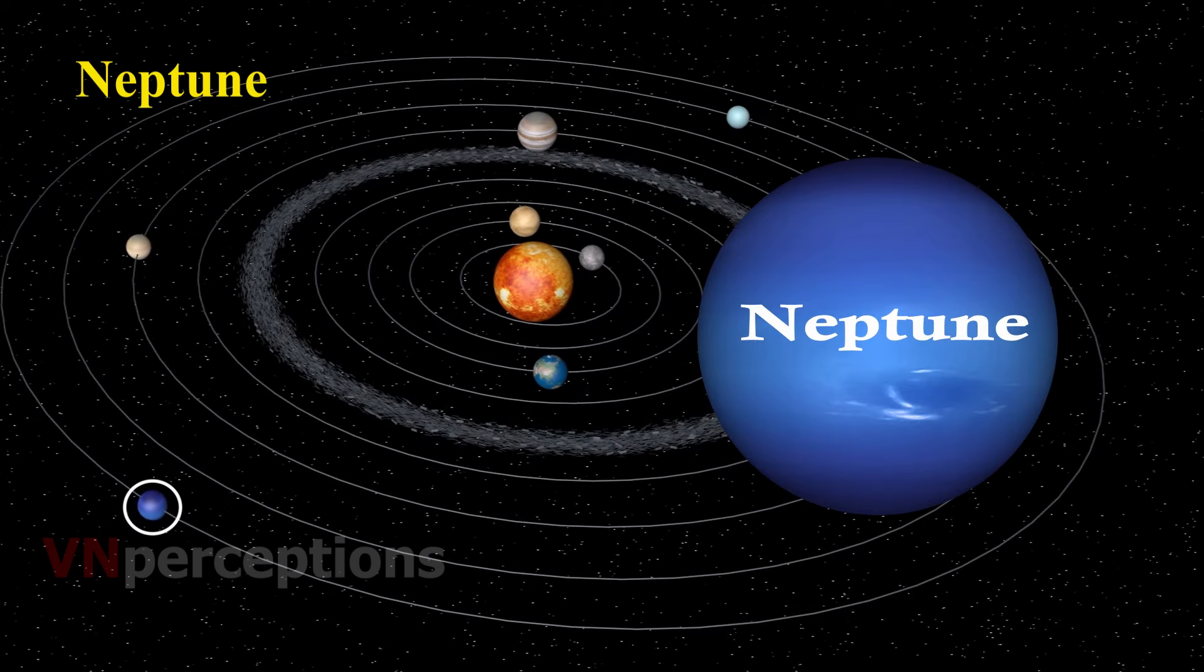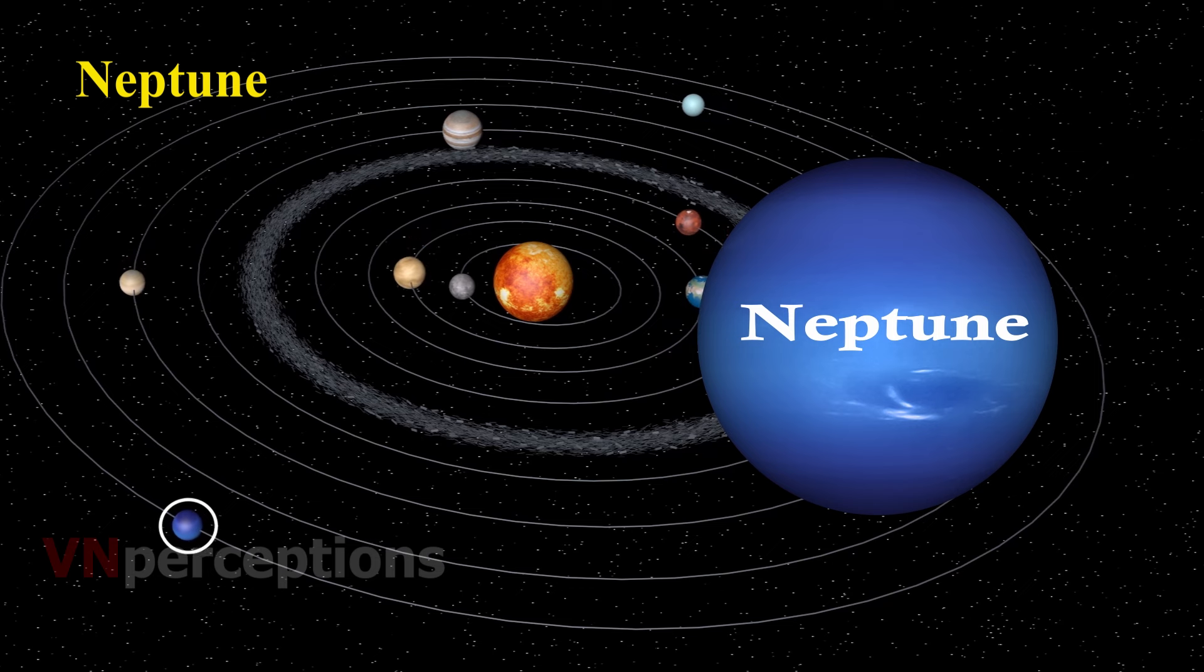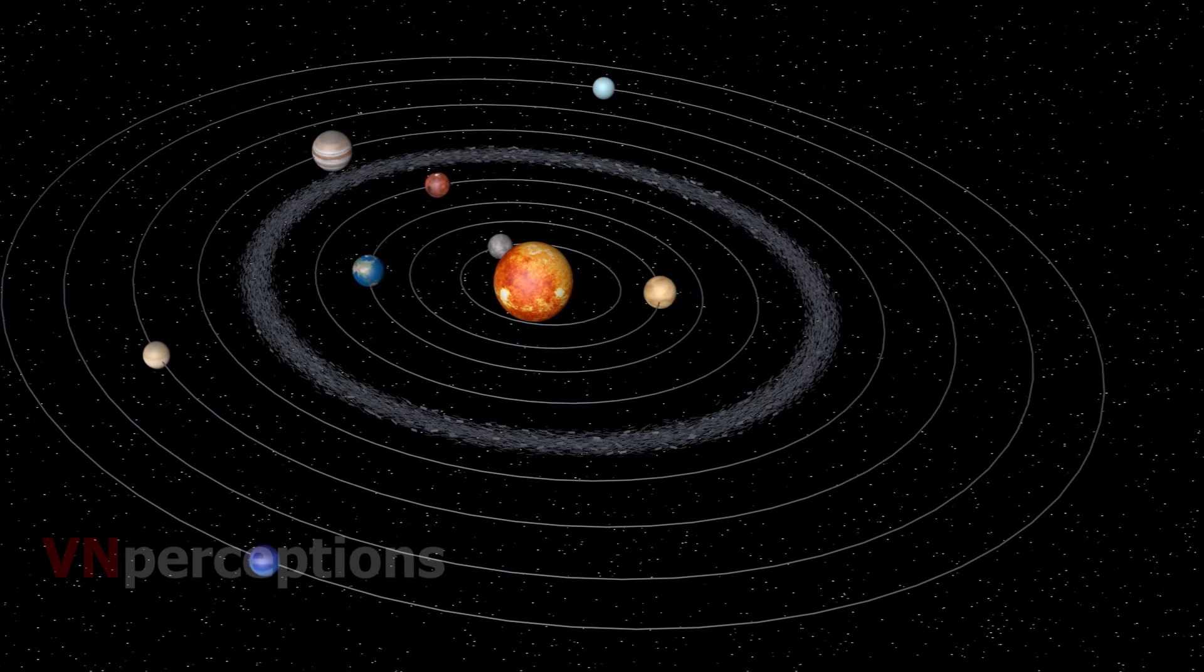Then it is Neptune. Neptune is the eighth and the farthest known planet from the Sun in the solar system. It is the fourth largest planet by diameter, the third most massive planet and the densest giant planet.